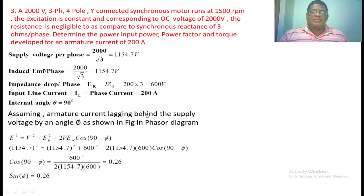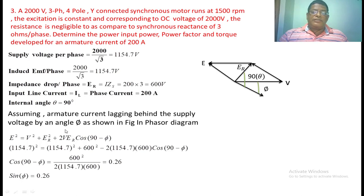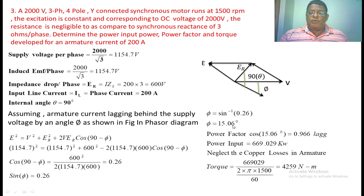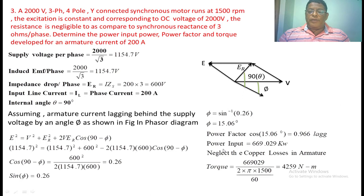Assuming the armature current lags the supply voltage by φ, from the phasor diagram: E squared equals V squared plus ER squared minus 2·V·ER·cos(90° − φ). Substituting all the values, we get sin φ equal to 0.26, so φ equal to 15.06 degrees — the angle by which the current lags the voltage. Power factor equals cos of this angle, giving 0.966 lagging. Input power equals root 3 times VL times IL times cos φ, giving 669.029 kilowatts.